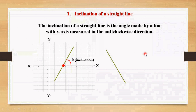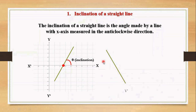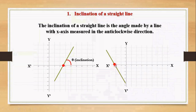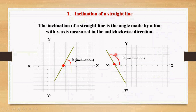Let's take one more straight line and measure its inclination. With respect to the point of intersection of this straight line and x-axis, we measure the inclination starting from the right portion of the x-axis. The angle is measured in the anticlockwise direction — that is the positive direction — with the line, theta. This is the inclination.